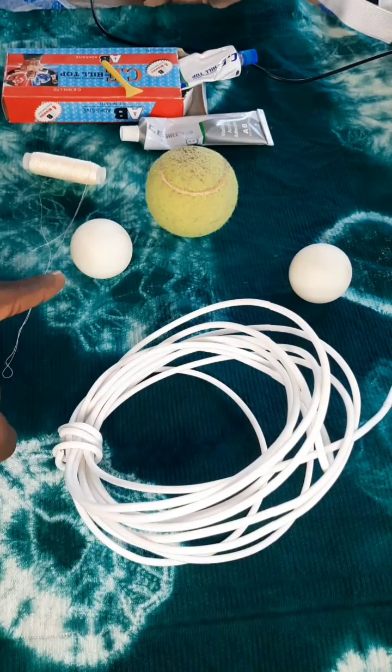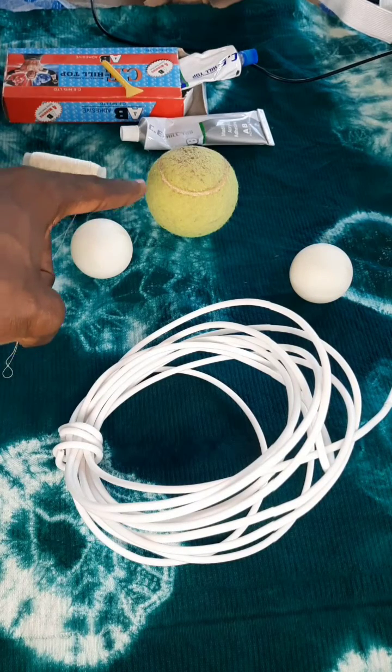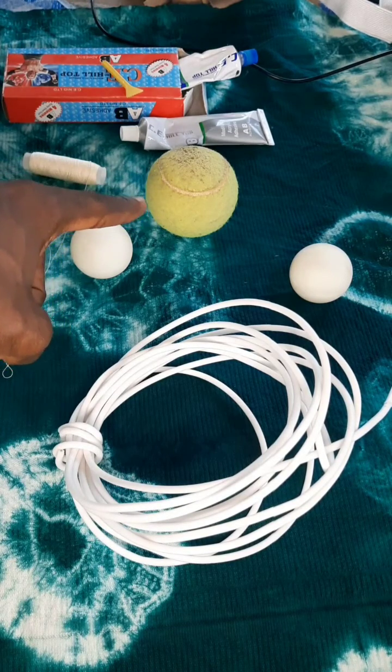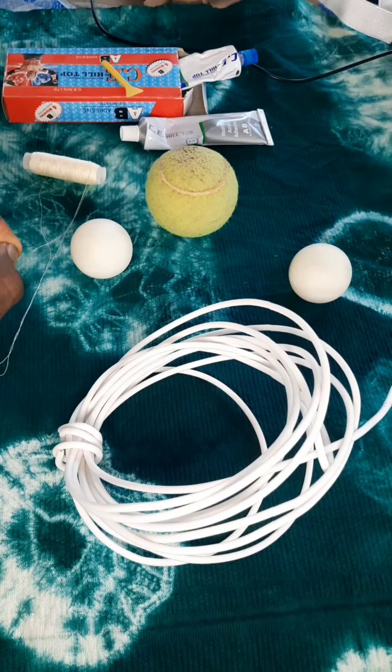We are going to use this as a stick, two of these white balls to present the oxygen atoms, one big red ball we're going to paint this red to present the hydrogen atom. We use this thread to measure the bond angle and glue to paste everything together.